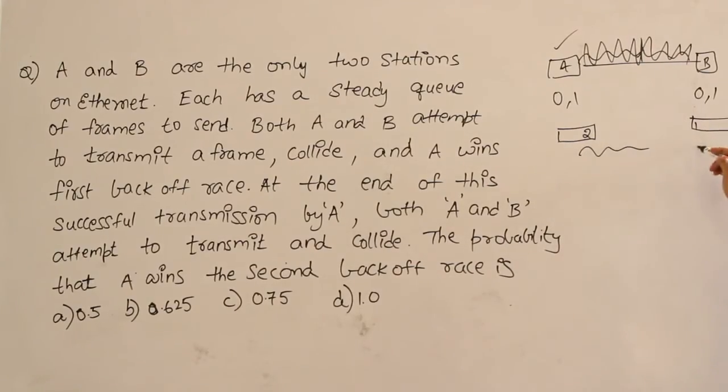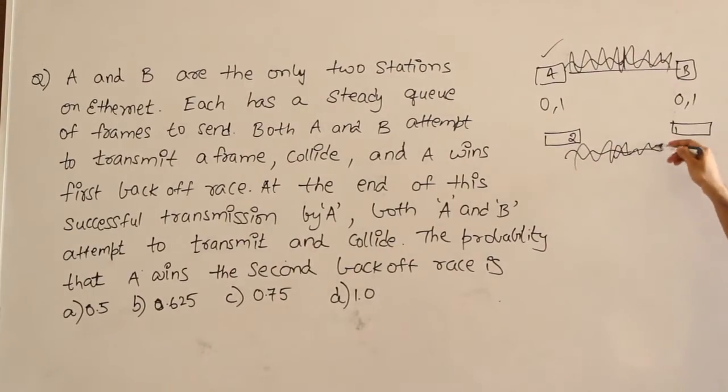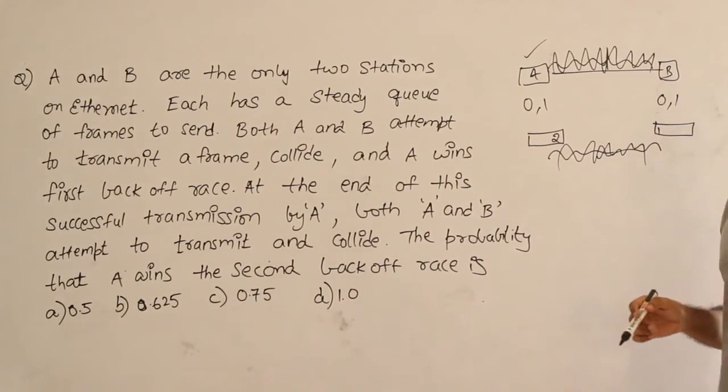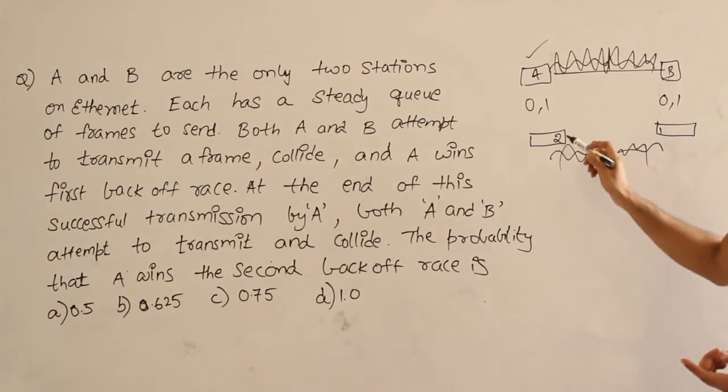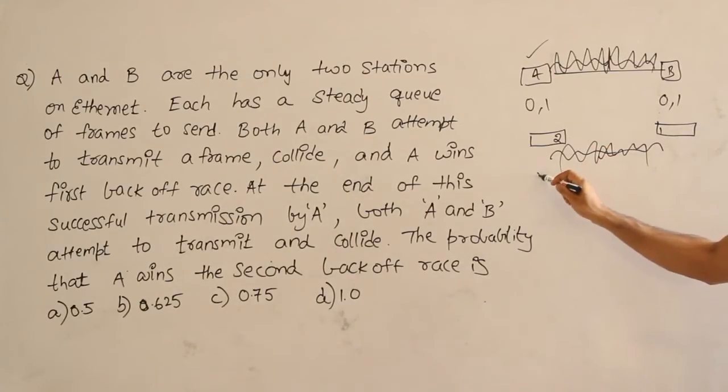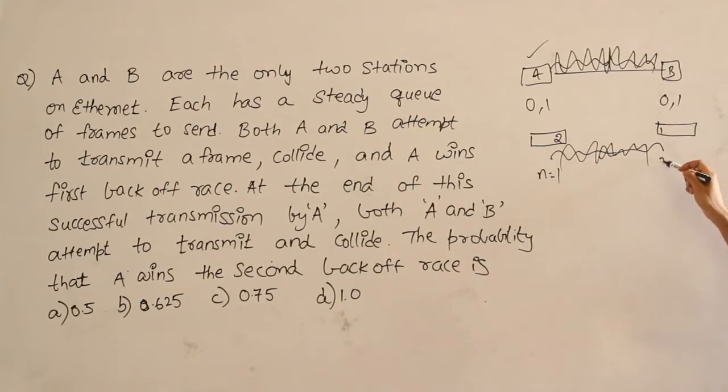And again when there is a collision between these two, what happens is, the probability that A winning will be more. The reason is, for the second packet of A, the collision number is 1 and for the first packet of B, the collision number is 2.